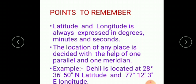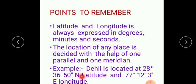This is how we can locate any place — Delhi is just one example. While locating a place on Earth we always take help of only one parallel and one meridian. So Delhi is located at 28° 36' 50" North latitude and 77° 12' 3" East longitude — one parallel and one meridian.